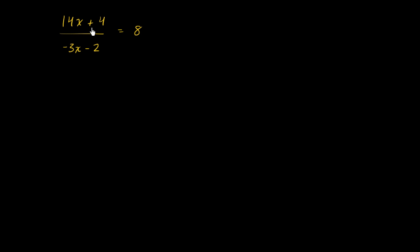We have (14x + 4) over (negative 3x minus 2) is equal to 8. I'll give you a few moments to see if you can tackle it on your own. This equation, at first, doesn't look like a straightforward linear equation — we have one expression on top of another. But as we'll see, we can simplify this to turn it into a linear equation.